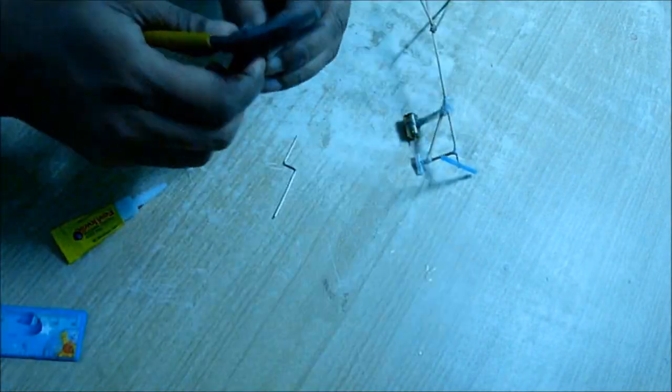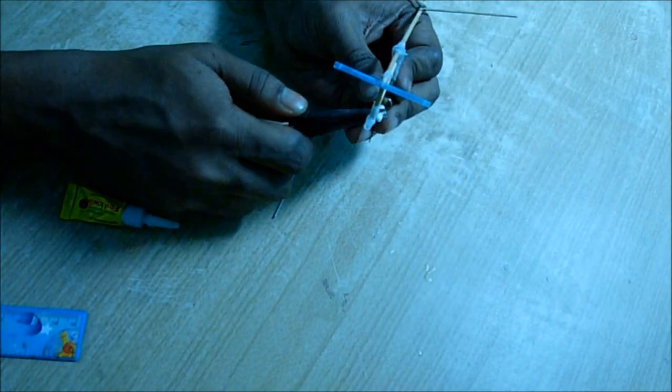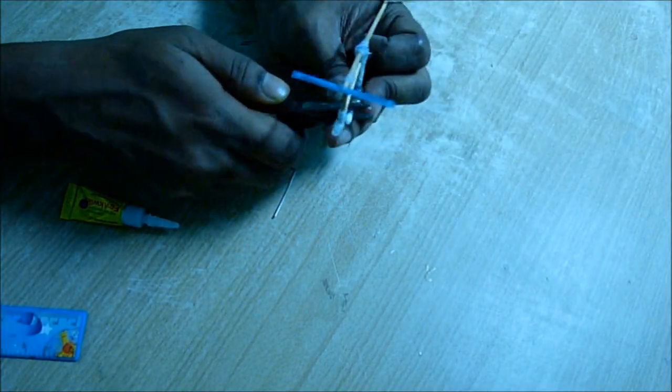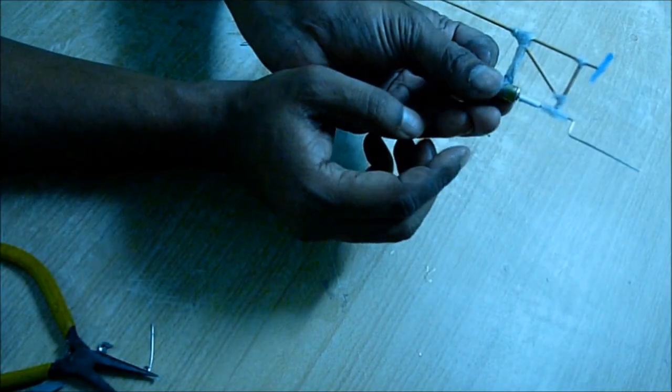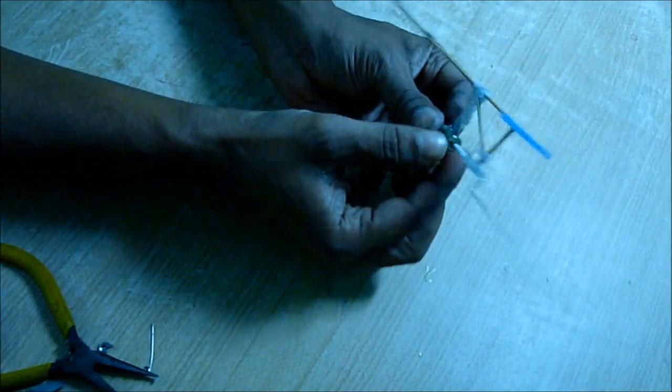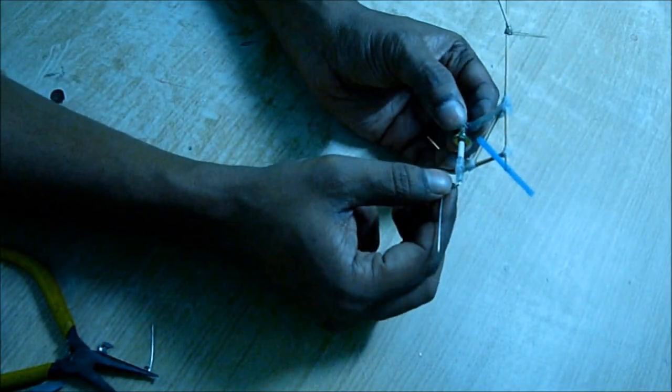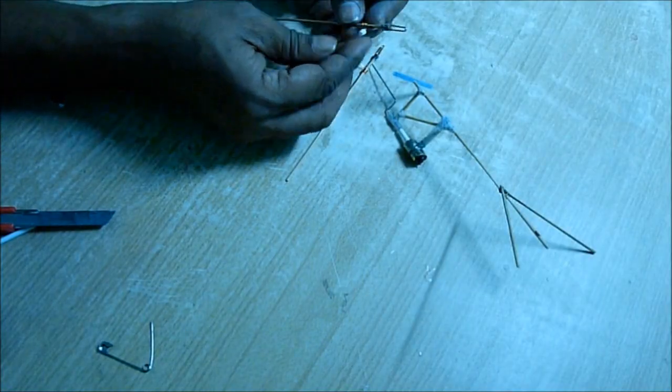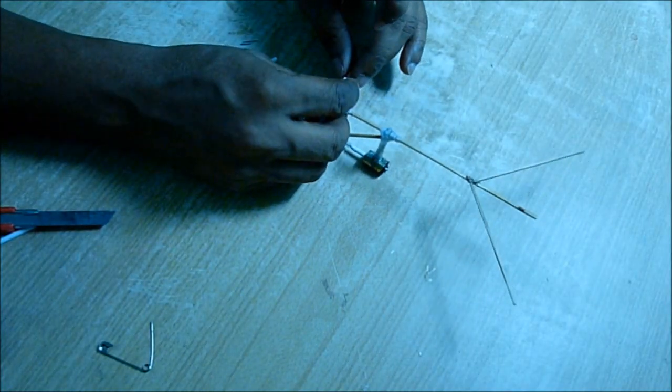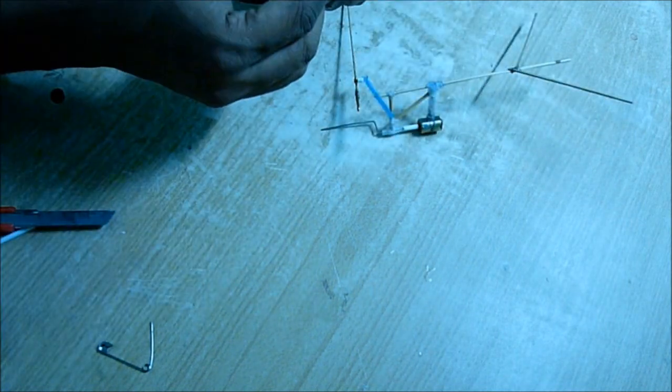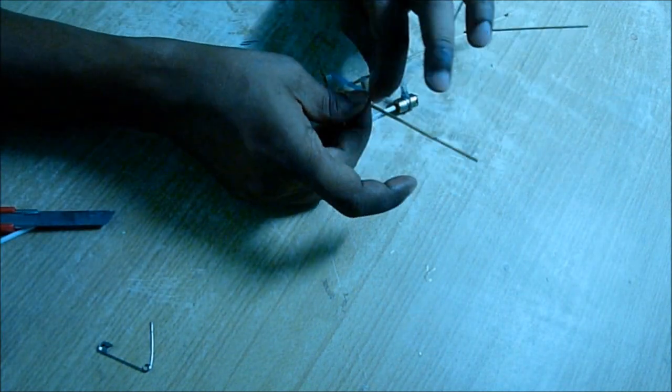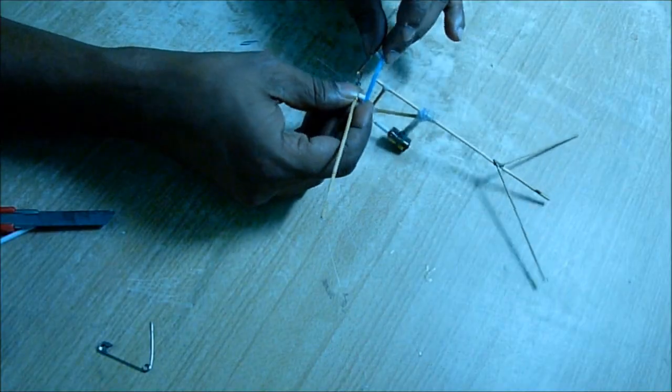Now take the two wings, pass it through two small holes at the end of this five centimeter long refill, pass and bend the wire on the other side.